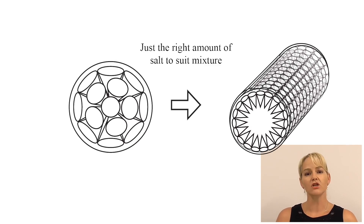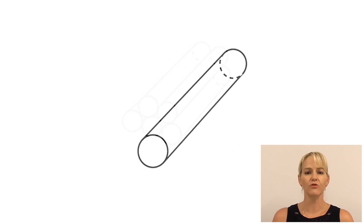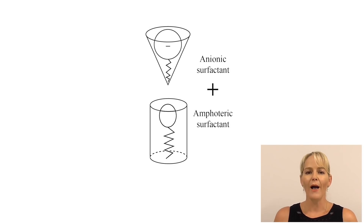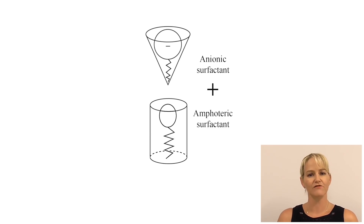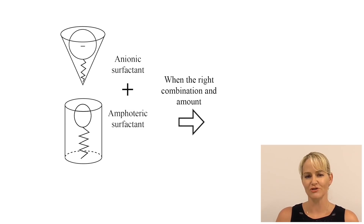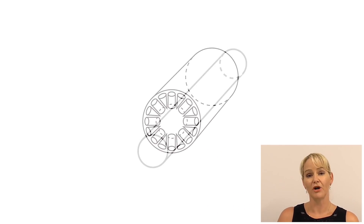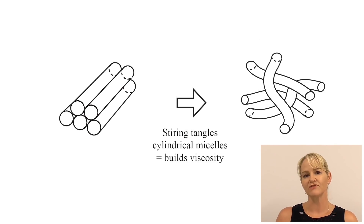When they form these long cylinders and we start to stir the formula, they tangle, and in tangling, the viscosity of the formula dramatically improves. We also see a similar change to the relative size of the head group when we adjust the pH, add electrolytes, or mix these anionic surfactants with amphoteric surfactants to form mixed micelles, which also take on a cylindrical shape. That's why amphoteric materials like cocamidopropyl betaine can help increase the viscosity of salt-responsive surfactants.